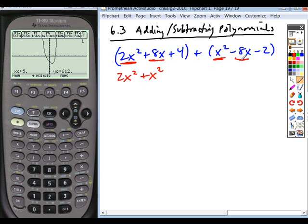Move to the next pair of like terms, plus 8x minus 8x. Move to the last pair of like terms plus 4 and minus 2.